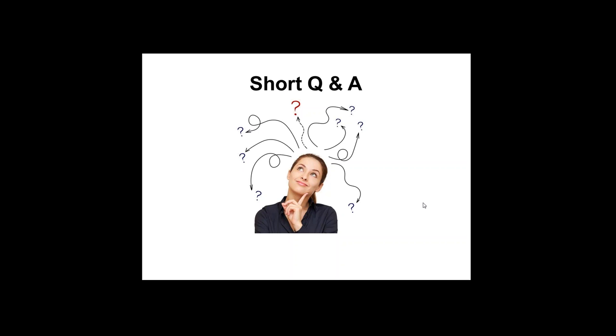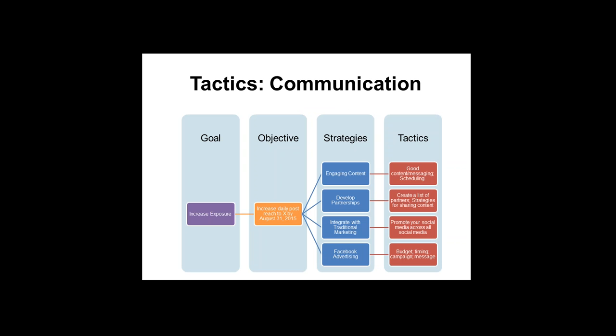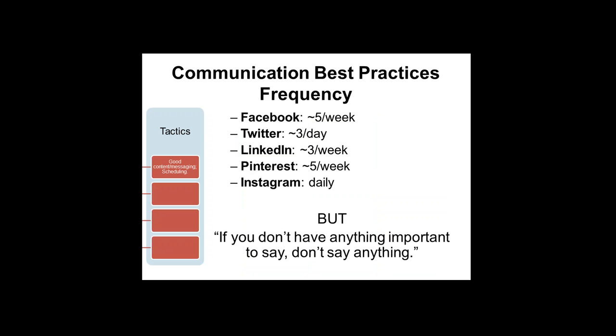So we'll get started again. Tactics fill out what those strategies are and how we are going to achieve them. Continuing to build on our flow chart: for engaging content, the tactics are creating good content and messages, and scheduling and being consistent. For developing partnerships, the tactic is creating a list of those partners and strategies for sharing content.